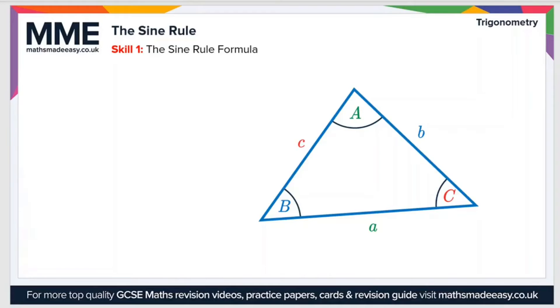Using this triangle here on the right as an example, the sine rule formula is as follows. A divided by sine A. I'm just going to quickly interrupt to say that we use lowercase letters for sides and we use capital letters for angles.